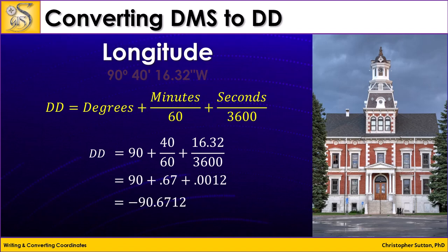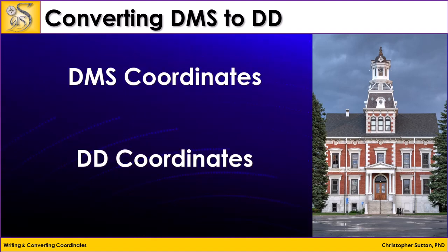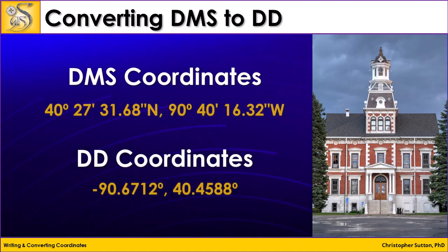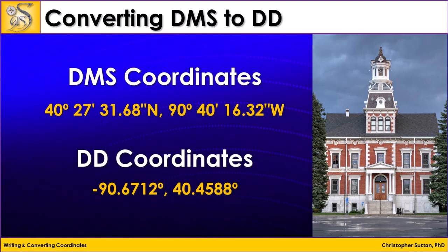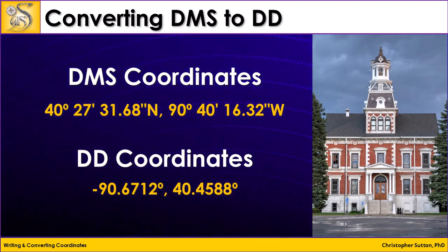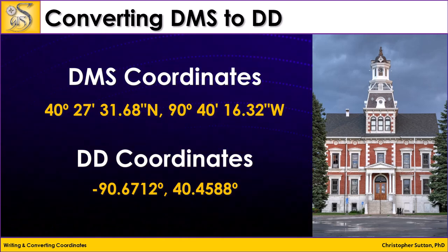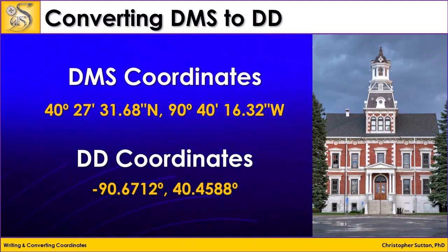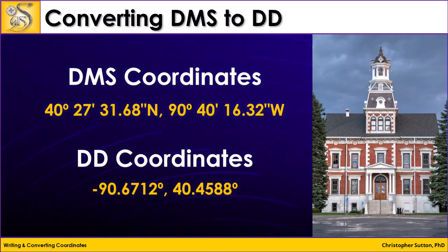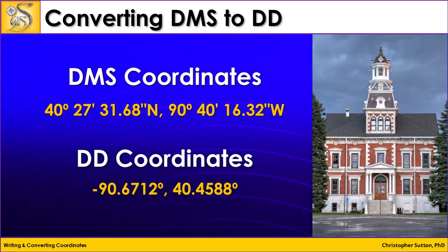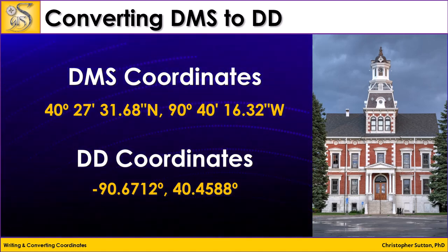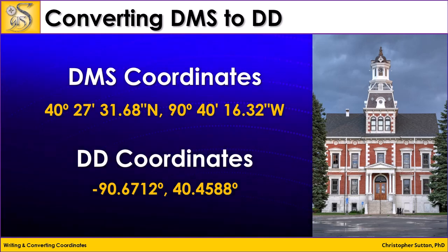So here they are next to each other. In DMS, we have latitude first: 40 degrees, 27 minutes, 31.68 seconds north; 90 degrees, 40 minutes, 16.32 seconds west. In decimal degrees, we do longitude first: minus 90.6712, and then the latitude, 40.4588.